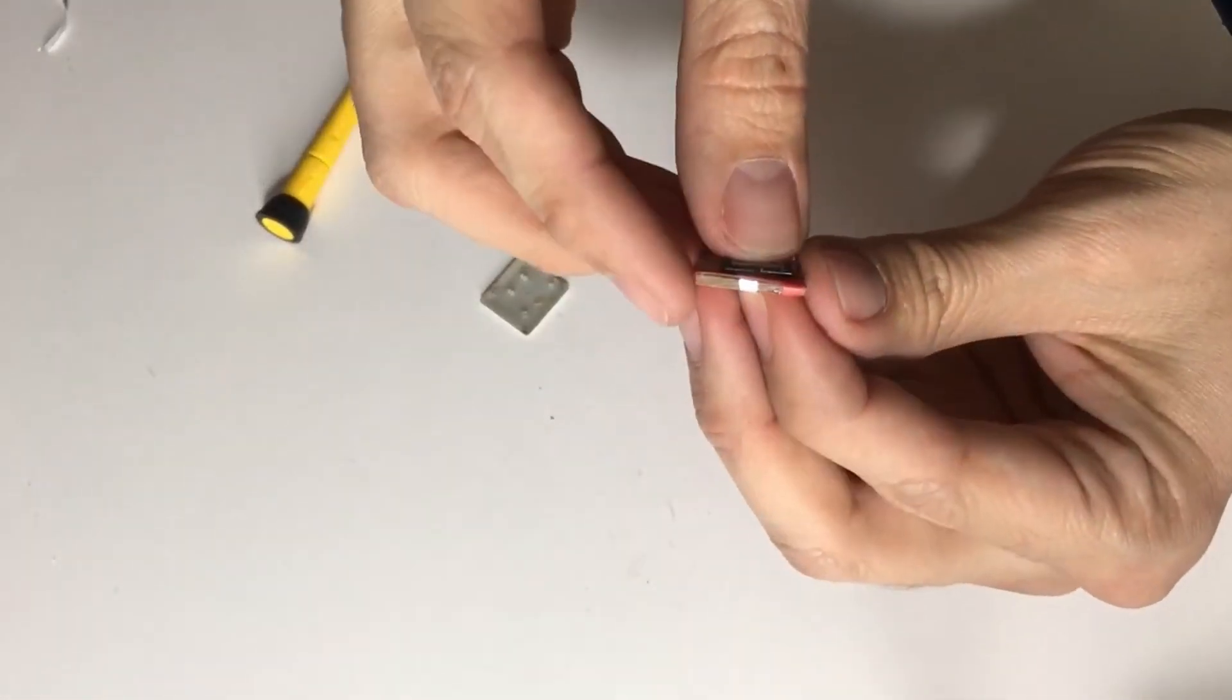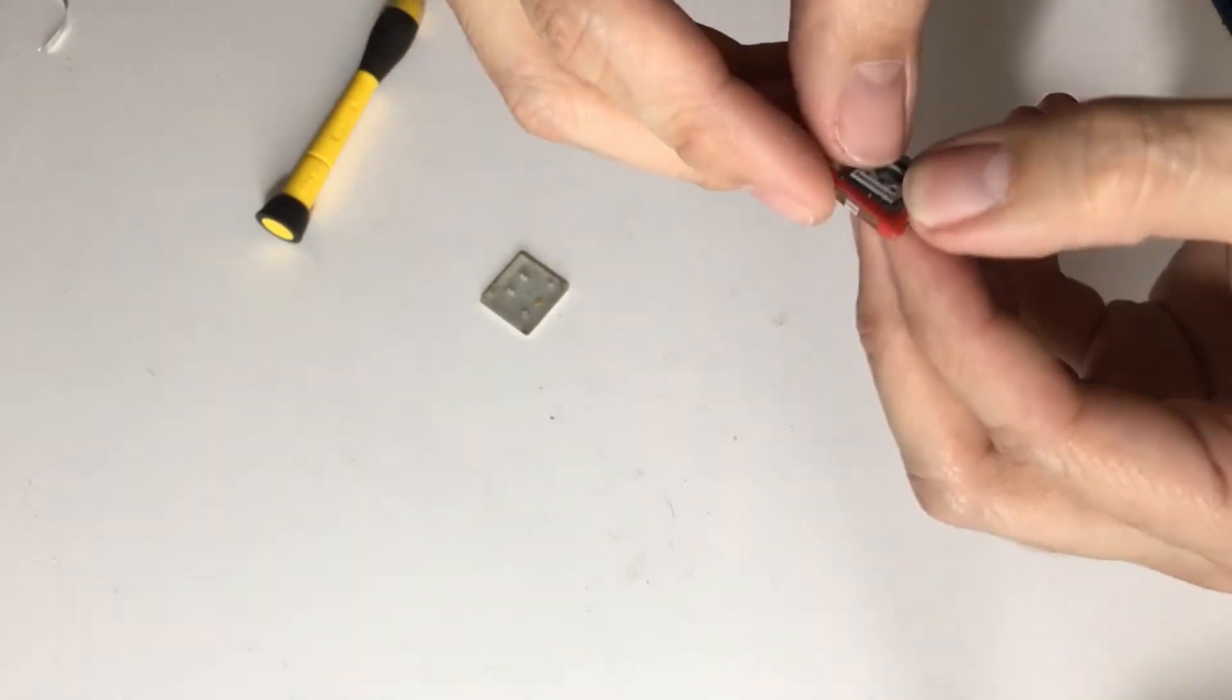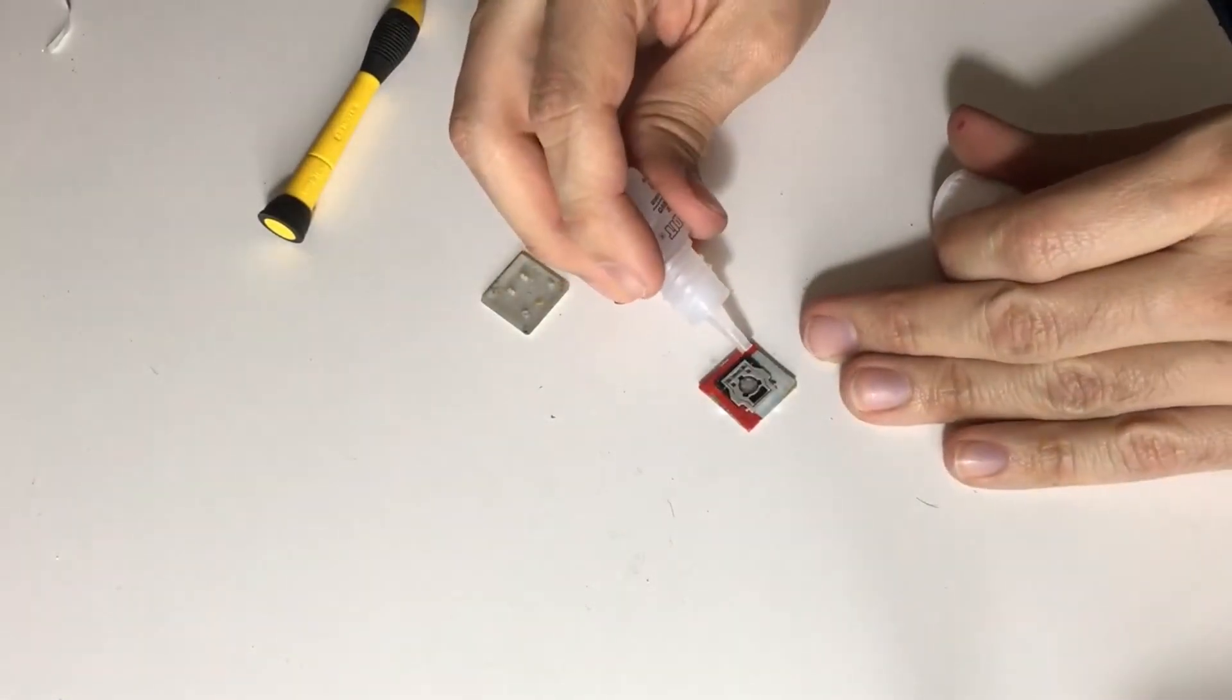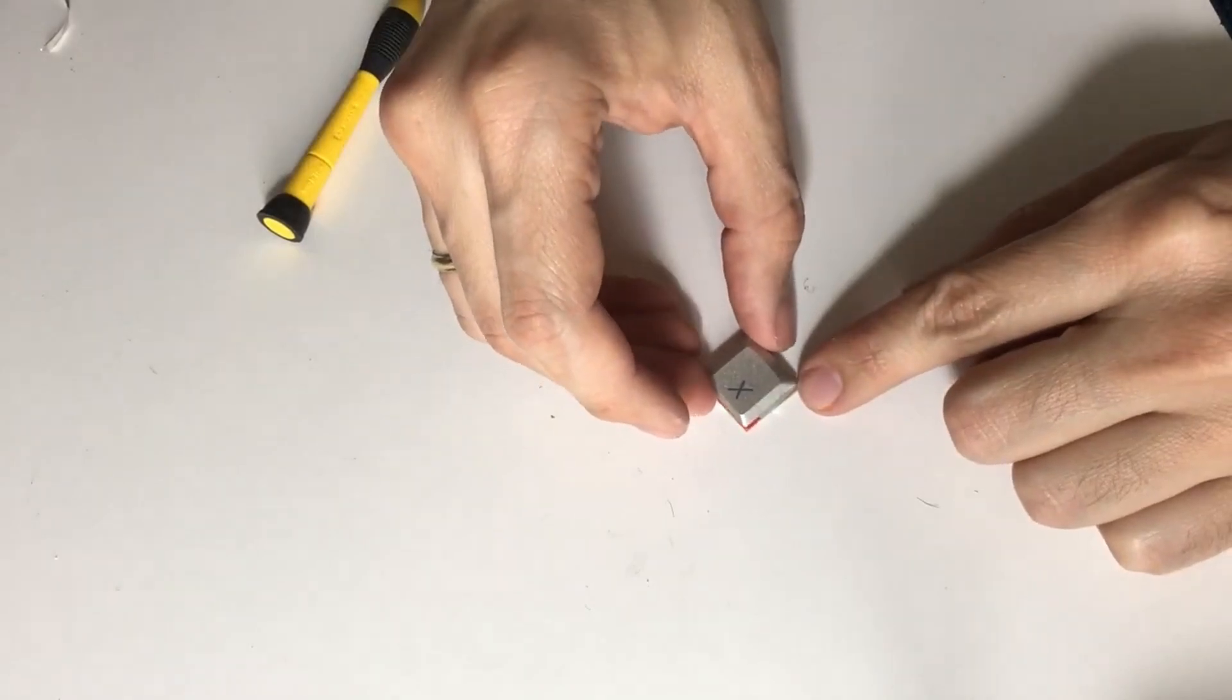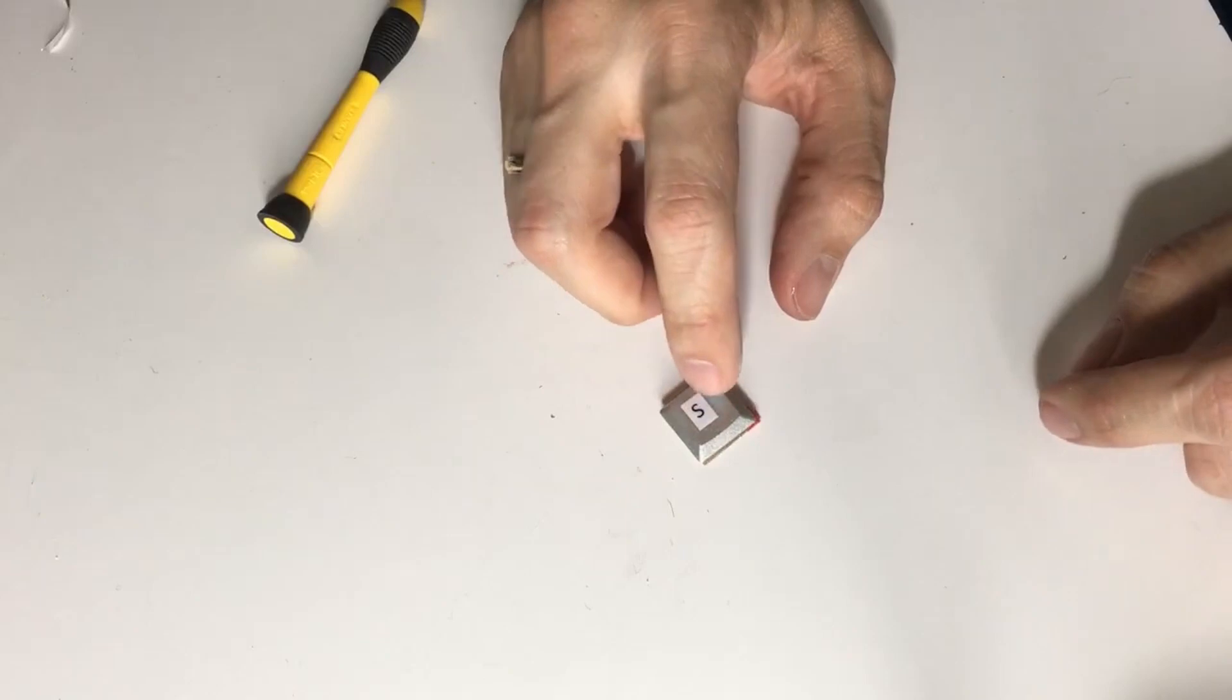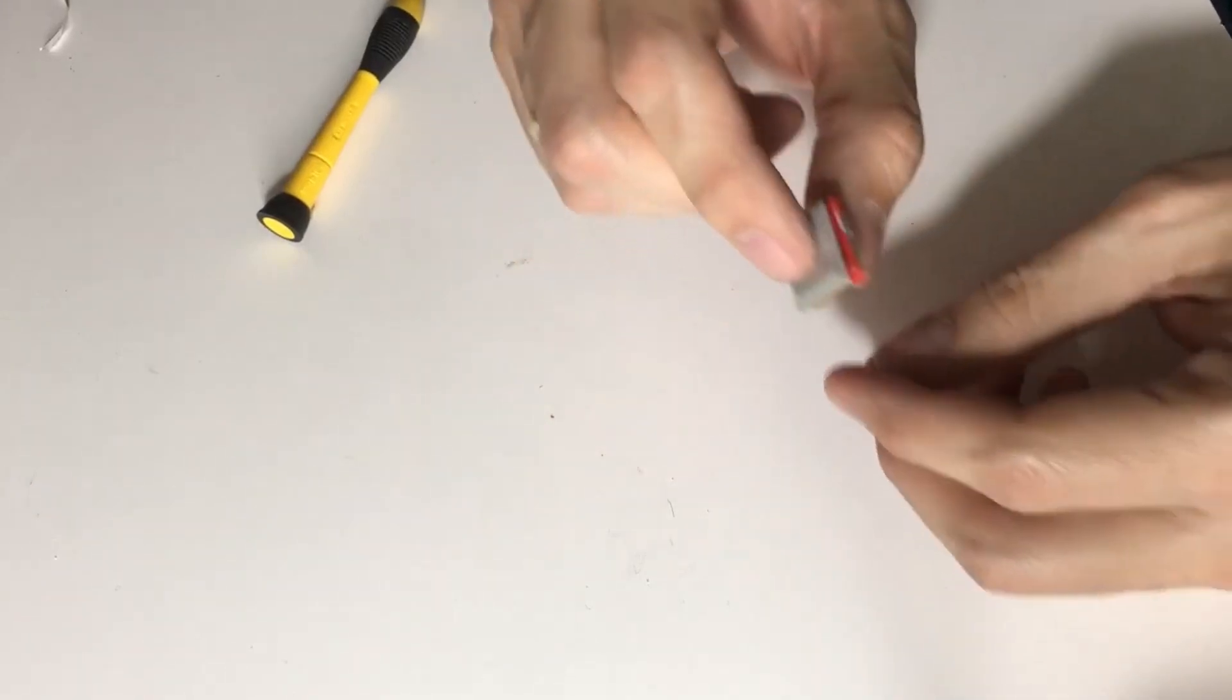Now I'm going to glue down the keys. Firstly, I will glue down the base of the key with instant adhesive. And then I put the little piece of rubber and then I put the keycap on top. As you can see, the key works well. When I press it down, the key goes up again.